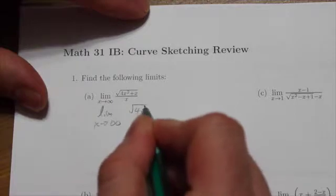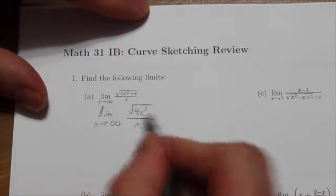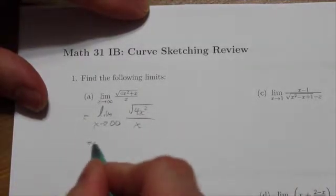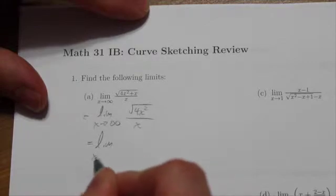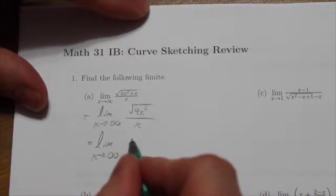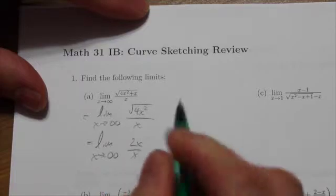And this can actually be approximated with just the square root of 4x squared, which will be the limit as x approaches infinity of 2x over x.